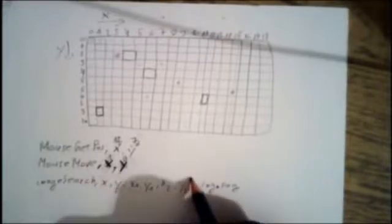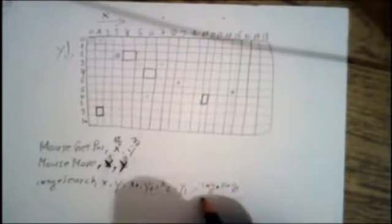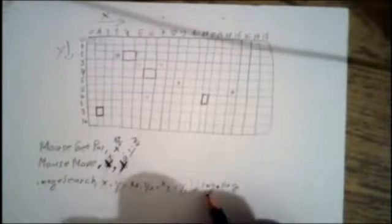For ImageSearch, when we call this function it returns the coordinates of the found image — X and Y — and we also specify the area and the image's absolute path.